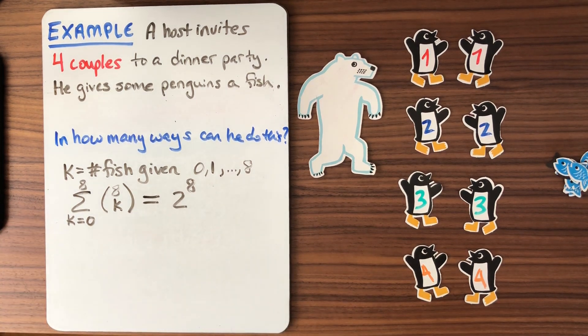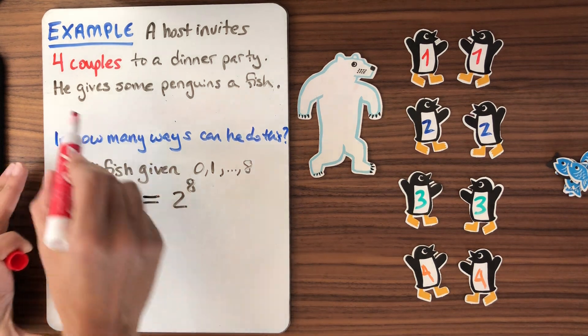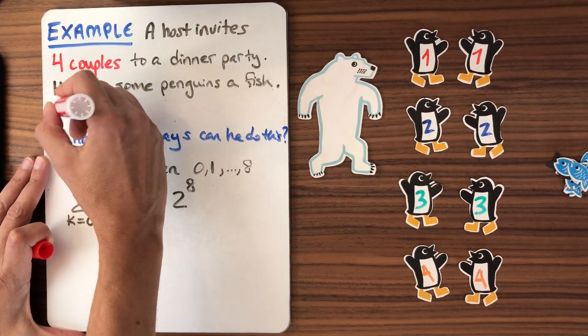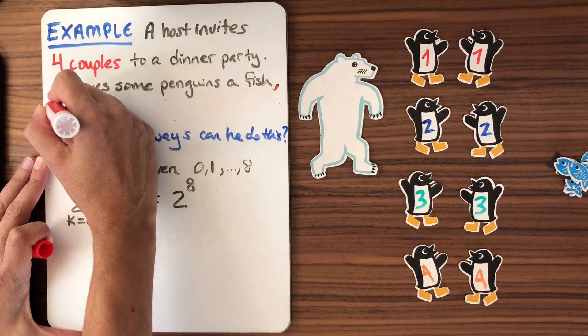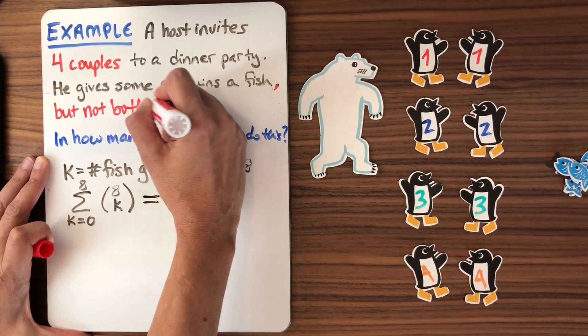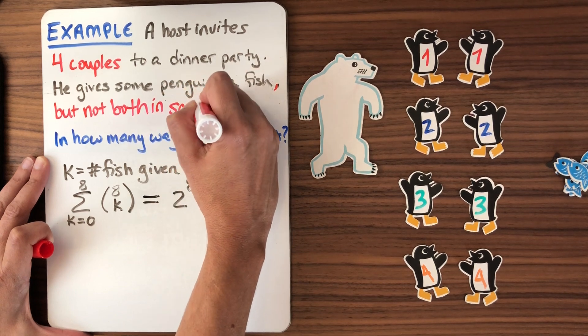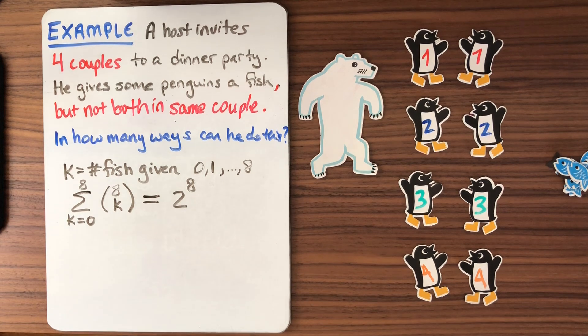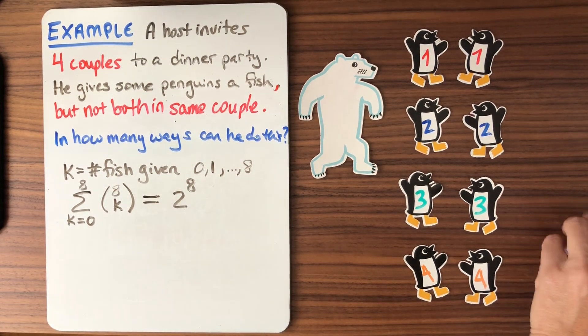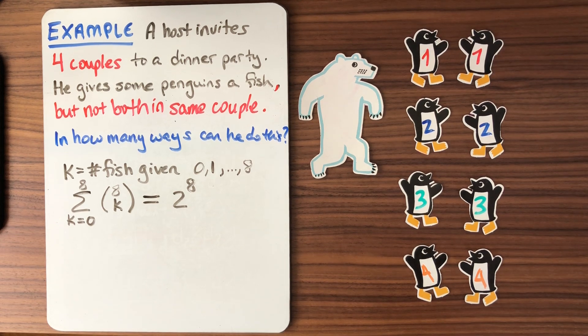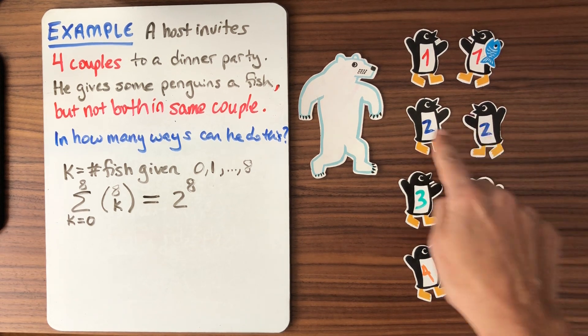Now let's make this problem a little more exciting and let's add a constraint, right? So he's going to give the penguins a fish, but my penguins come in pairs here. So let's use that. But not both in the same couple. So for some reason, he's a very greedy polar bear and he doesn't want to give out that many fish. And so he decides that if I'm going to give a fish to you, then you don't get a fish.